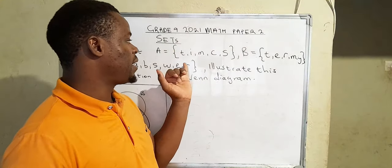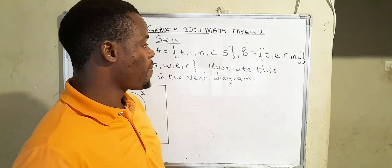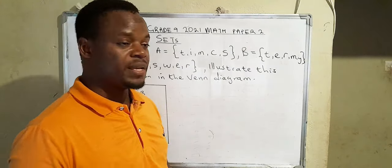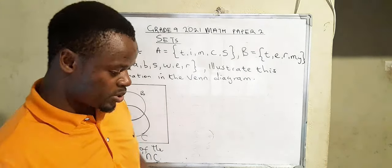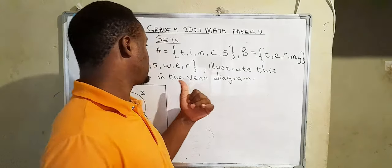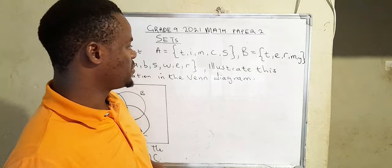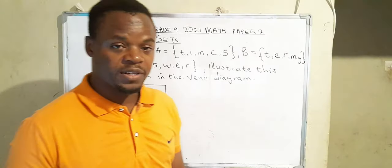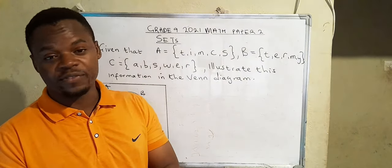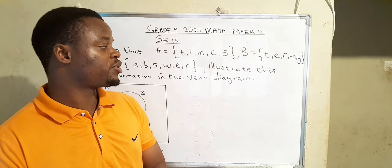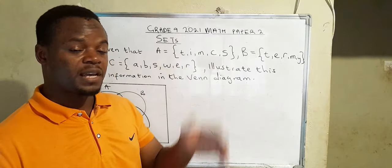Given that A is equal to {T, I, M, C, S} and B is equal to {T, E, R, M, Y}, C is equal to {A, B, S, W, E, R}. So how do you illustrate this information in the Venn diagram? The first thing that you have to do is you have to list these sets.